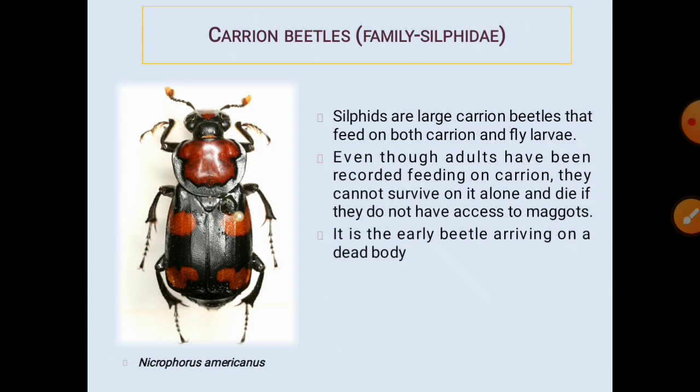Now comes the beetle families. Carrion beetles from the family Silphidae: silphids are large carrion beetles that feed on both carrion and fly larvae. Even though adults have been recorded feeding on carrion, they cannot survive on it alone and die if they do not have access to maggots. They are the early beetles to arrive on a dead body and feed on the dipteran maggots; without fly maggots, they cannot survive.